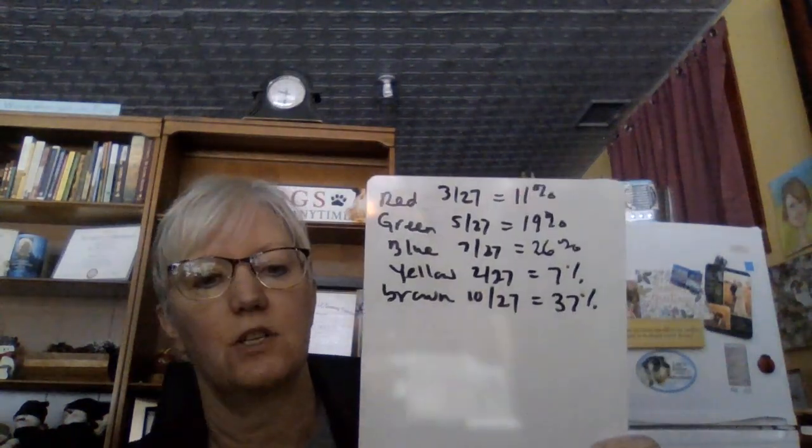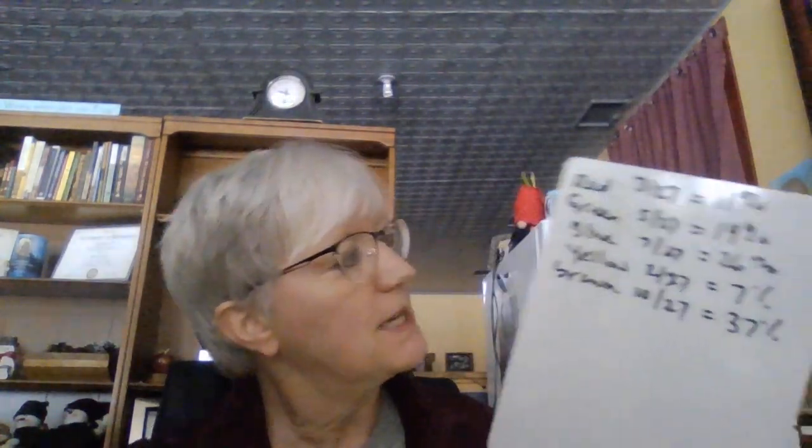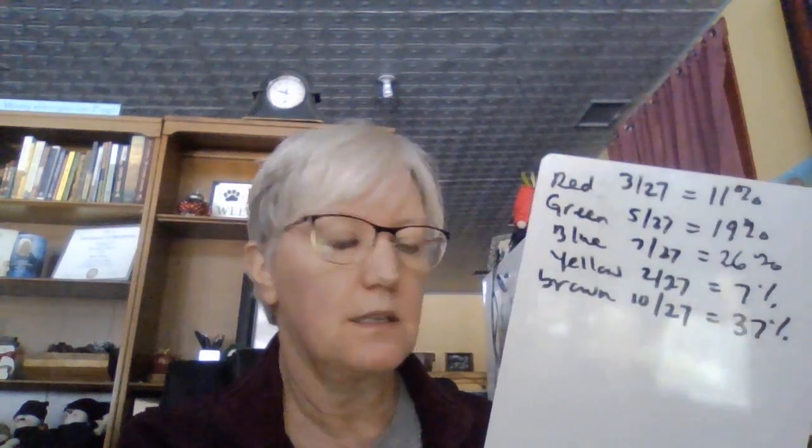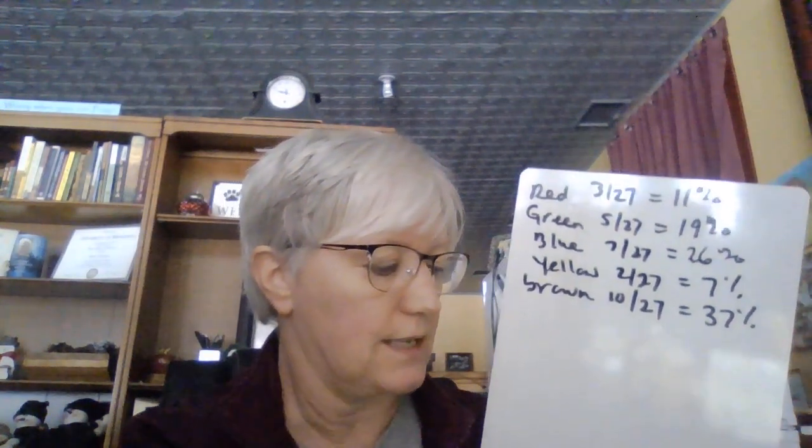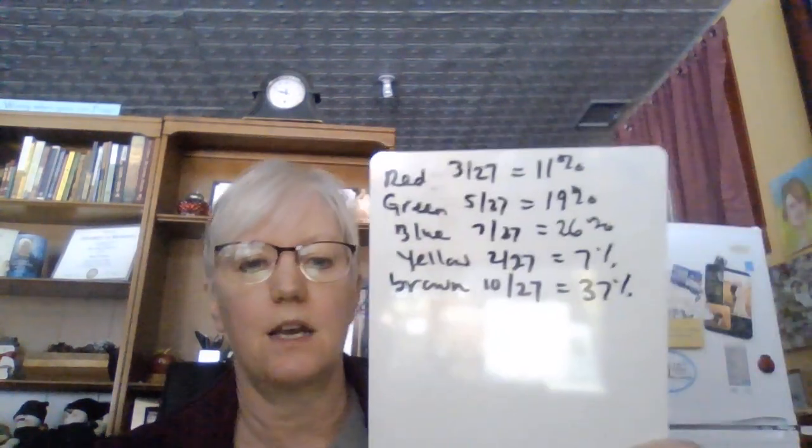7 divided by 27 is 0.259 — close to 26%. Then 2 out of 27 is 0.074, so 7%. And 10 out of 27 is 37%. Before going further, I have to make sure these percentages add up to 100: 11 plus 19 plus 26 plus 7 plus 37.